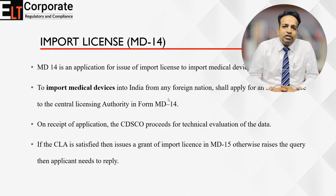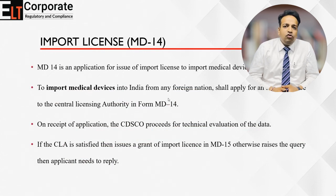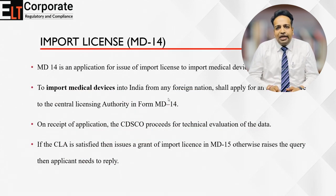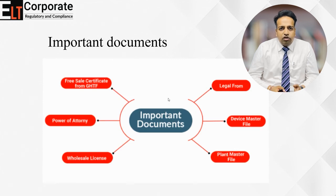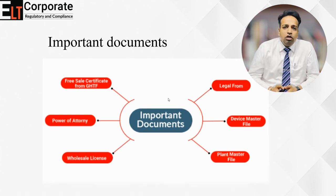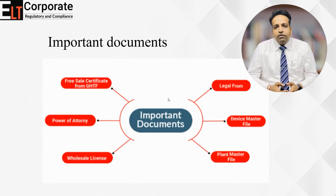CDSCO is responsible for issuance of three kinds of medical device licenses. The first is the import license. The second is the manufacturing license, which specifically applies to Class C and D, since for Class A and B the jurisdiction lies with the state governments. For getting the import license, you need to apply under Form MD-14, and the license will be issued under Form MD-15. Important documents required for an import license application include a Free Sale Certificate from your foreign supplier, and a Power of Attorney by which the foreign supplier authorizes you to apply for registration of the medical devices as an importer.